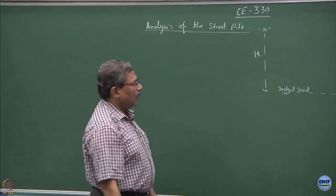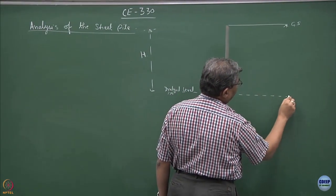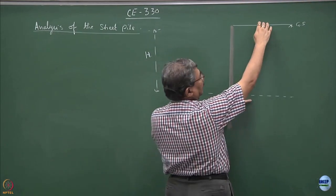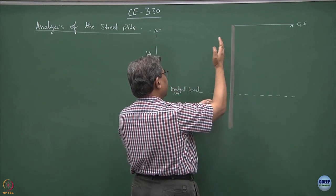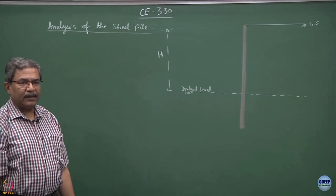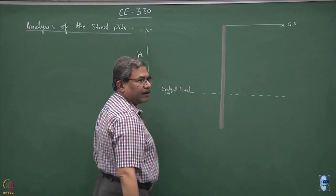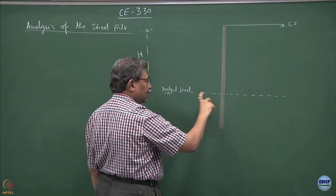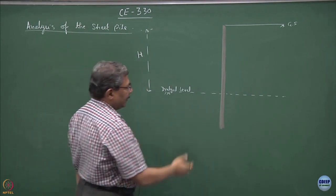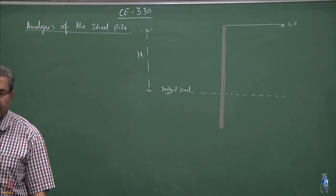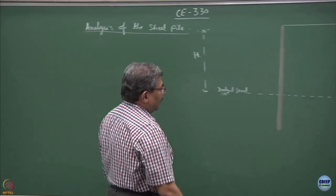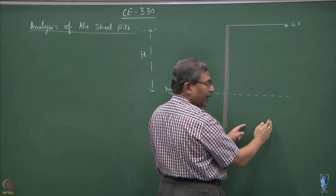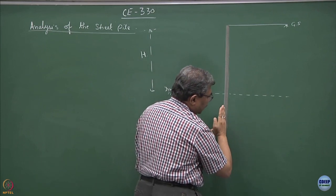Now let us understand the mechanics of deflection of this pile. You are retaining this soil mass; active earth pressure is acting on the pile, and the pile has a tendency to deflect on the left-hand side. A certain portion of the pile is embedded into the soil mass, so below the dredge level, up to a certain depth, the soil will have a tendency to resist this movement. What about this portion of the soil mass?